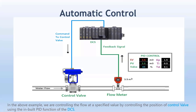There are two ways to implement PID: one is using a dedicated hardware controller to regulate the process parameter; the other is to use PLC or DCS PID control blocks. In this example, we are controlling the flow at a specified value by controlling the position of the control valve using the inbuilt PID function of the DCS.